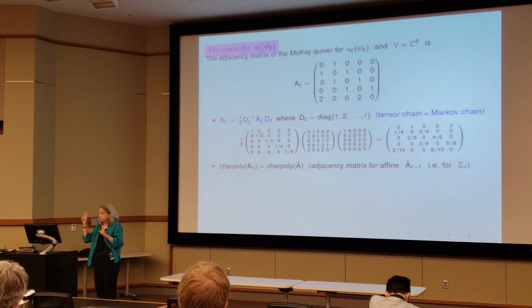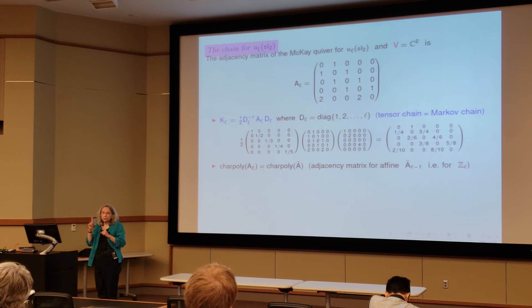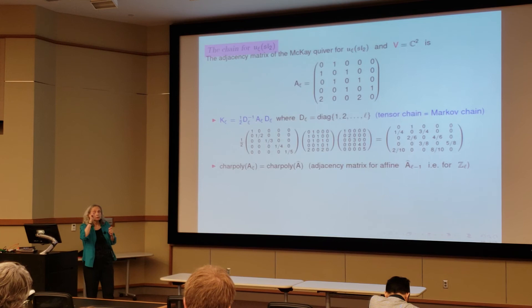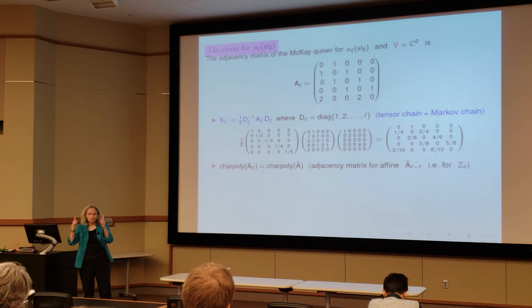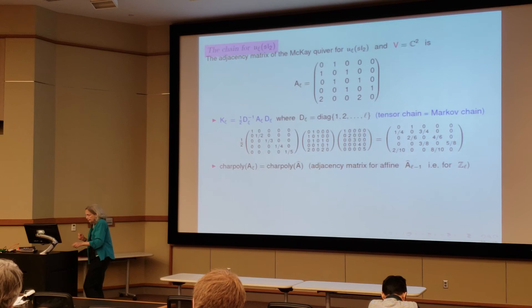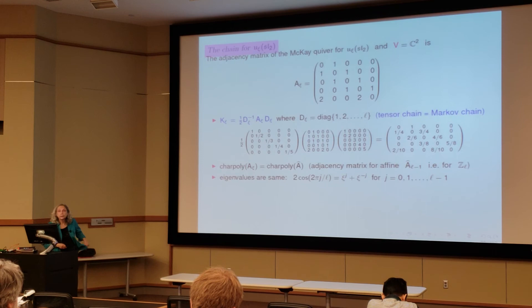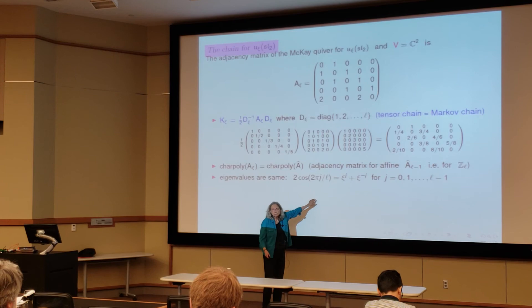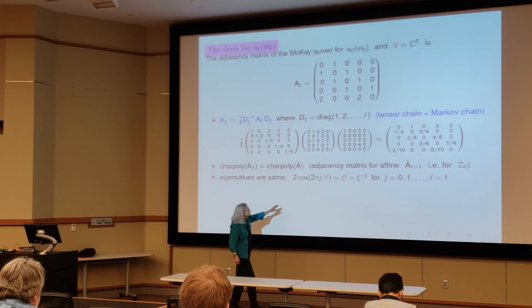But remember, what we're tensoring with is two-dimensional. The symbols for the cyclic group are one-dimensional. So there are things like C to the J plus C to the minus J. V corresponds to the eigenvalue of C plus C inverse. So those are the eigenvalues. The eigenvalues are the same. They're cosines.